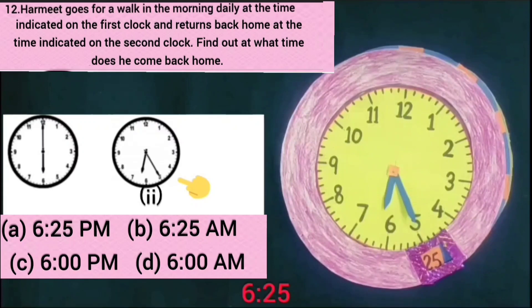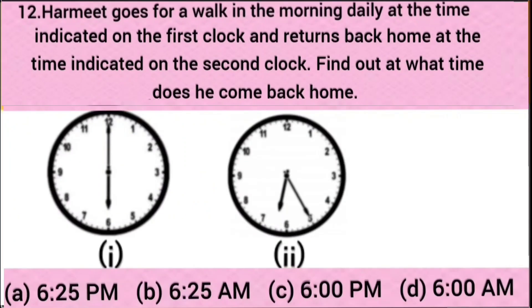This is a morning time and we put a.m. at the morning time, so he returns back home at 6:25 a.m. Option A is 6:25 p.m. — incorrect. Option B is 6:25 a.m. — this option is correct. Option C is 6 p.m. — incorrect. Option D is 6 a.m. — also incorrect. Only option B is correct, so I put a tick on option B.